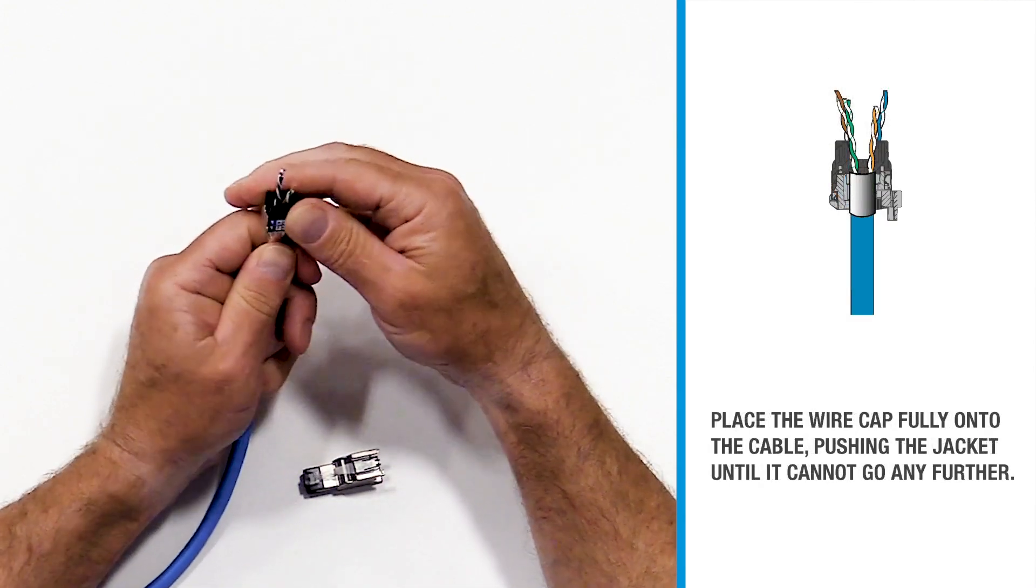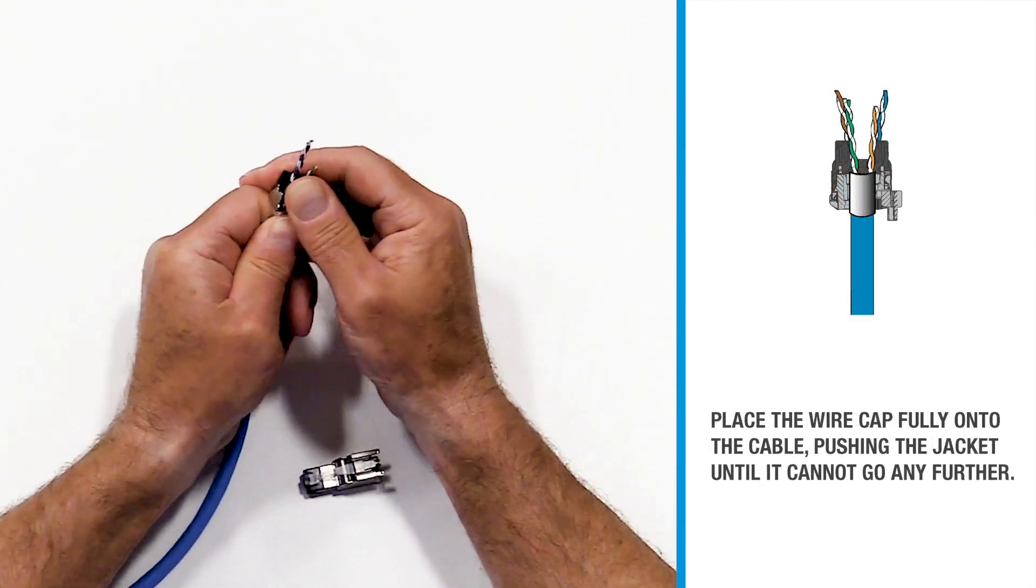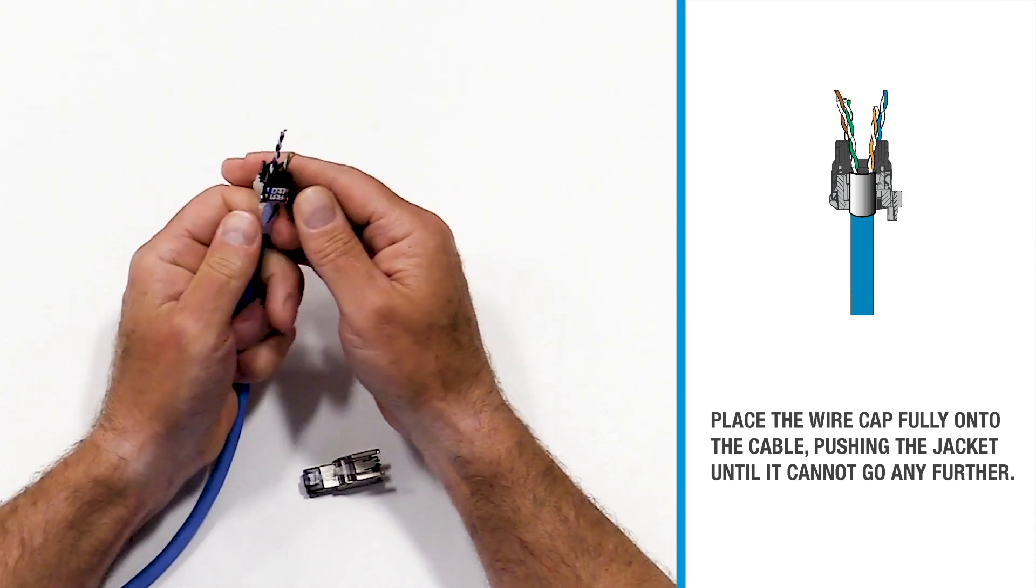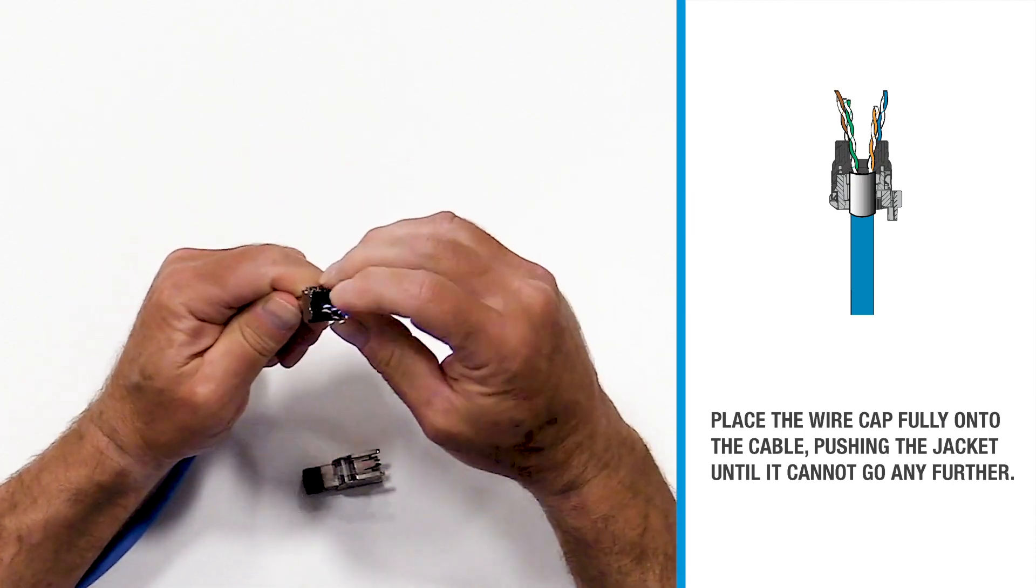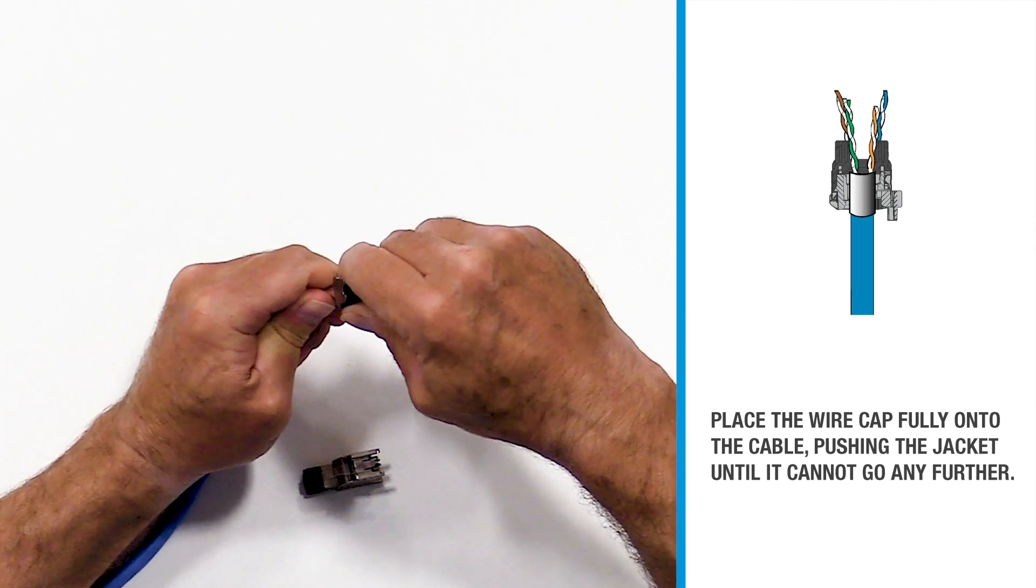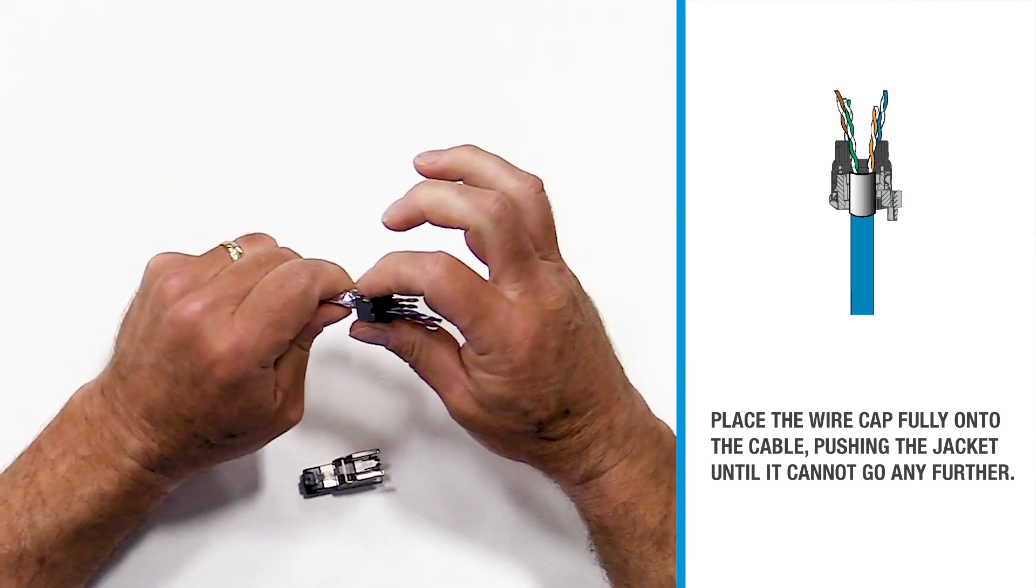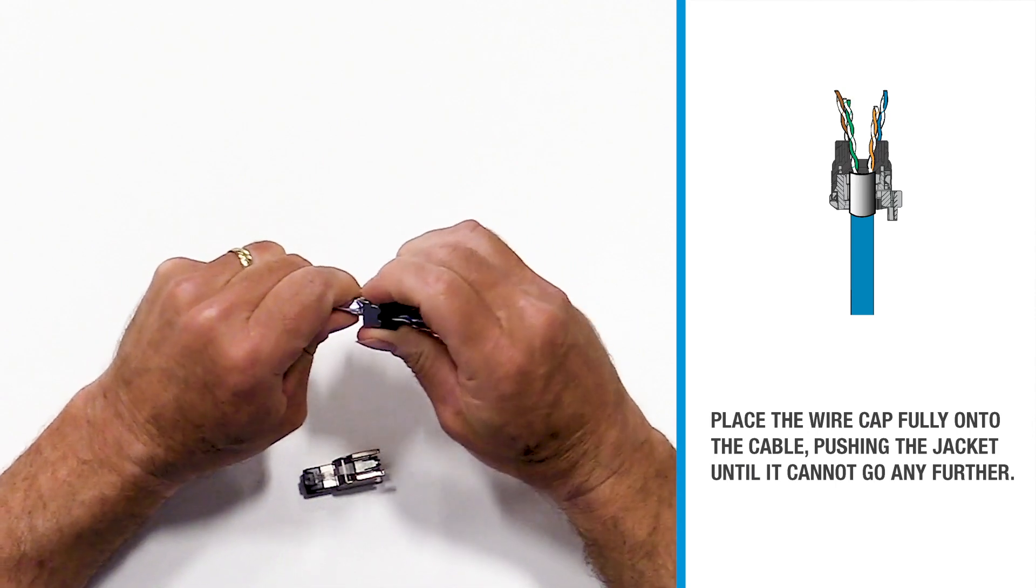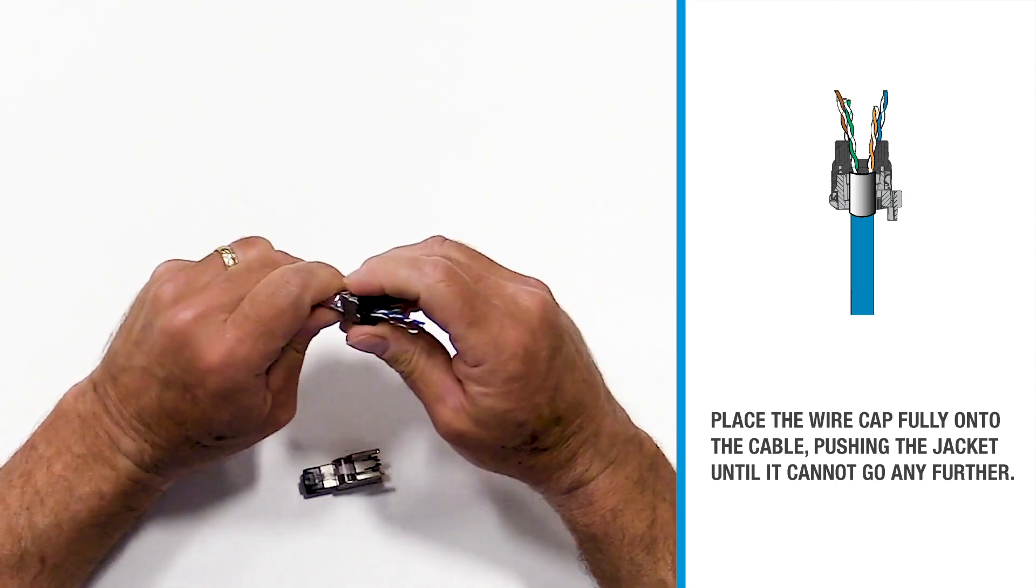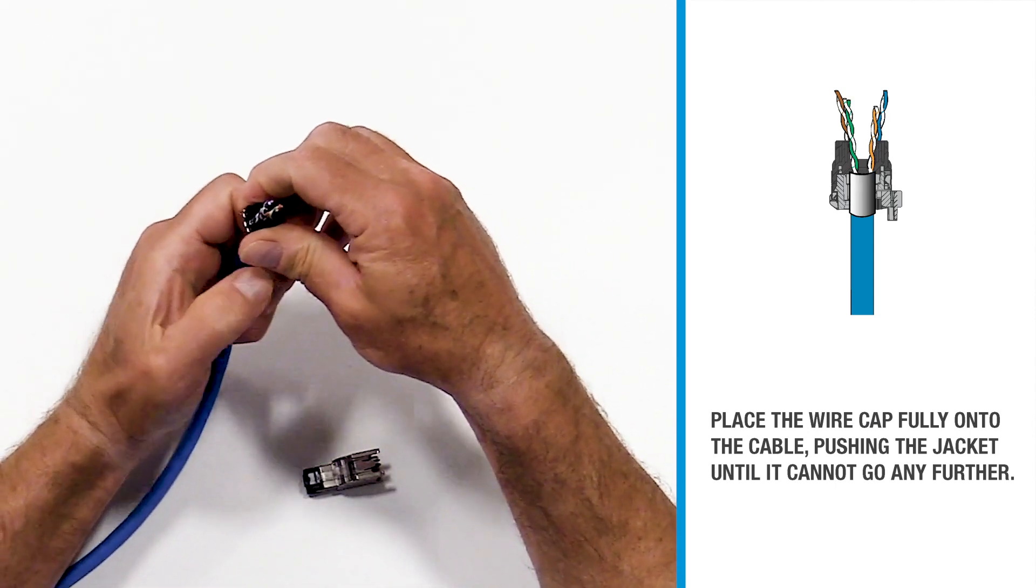Place the wire cap fully onto the cable, pushing the jacket all the way up into the wire cap until it cannot go any further. A small pinch with your fingers onto the strain relief will help keep that wire cap in place.